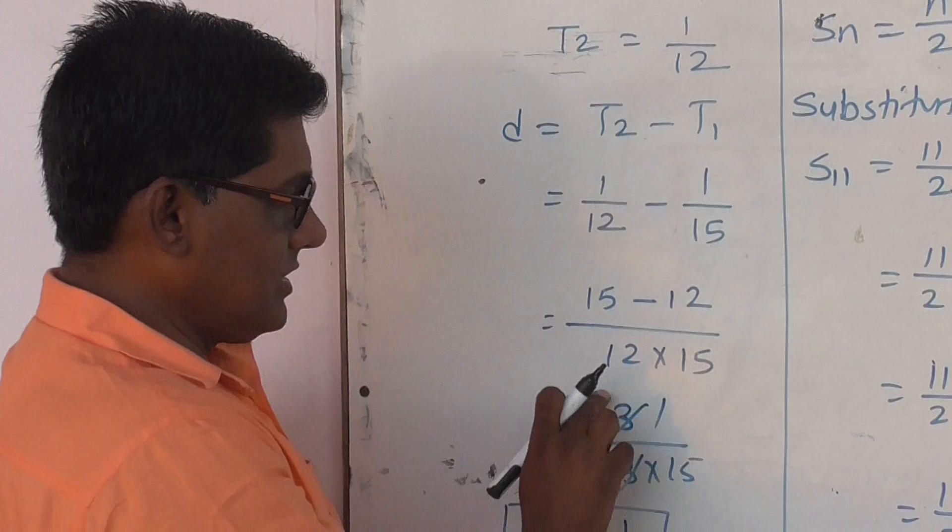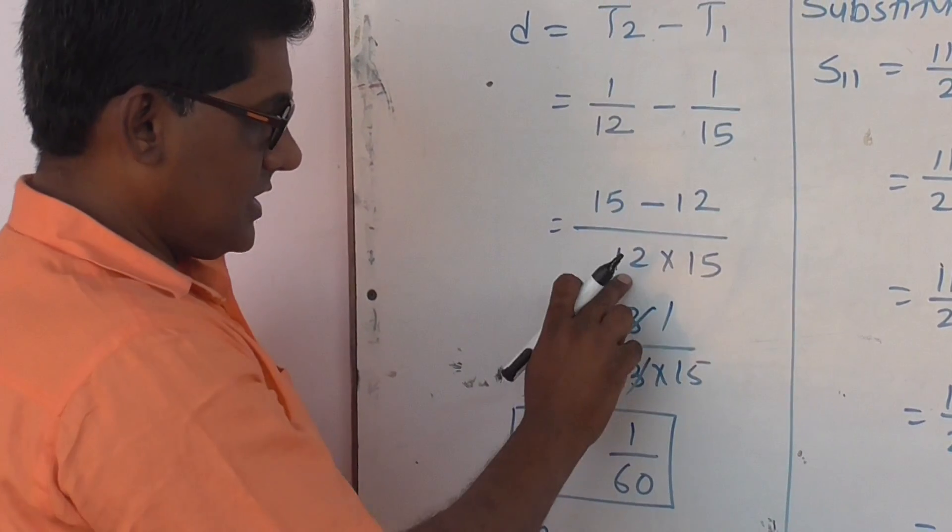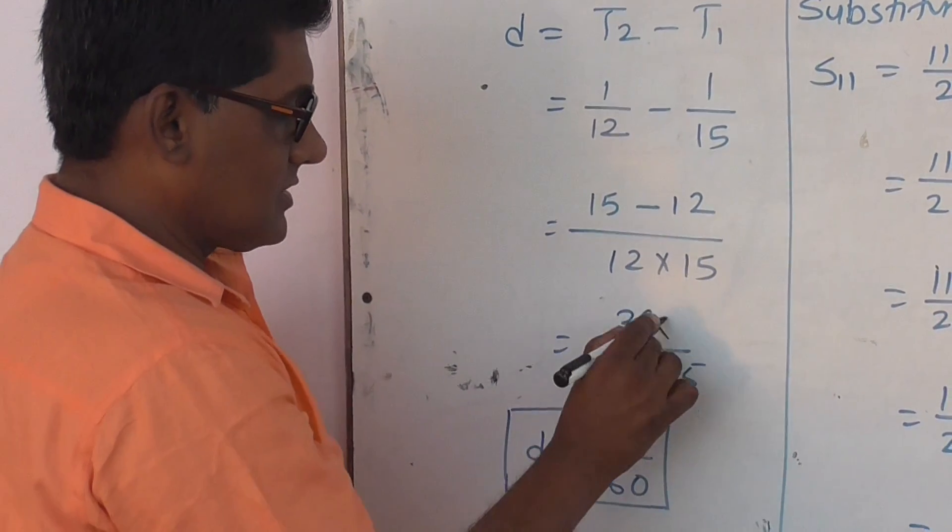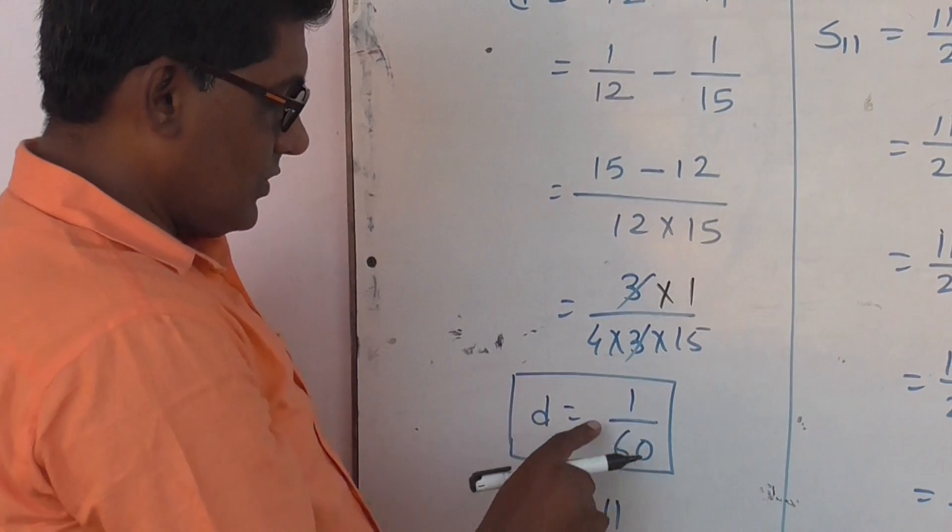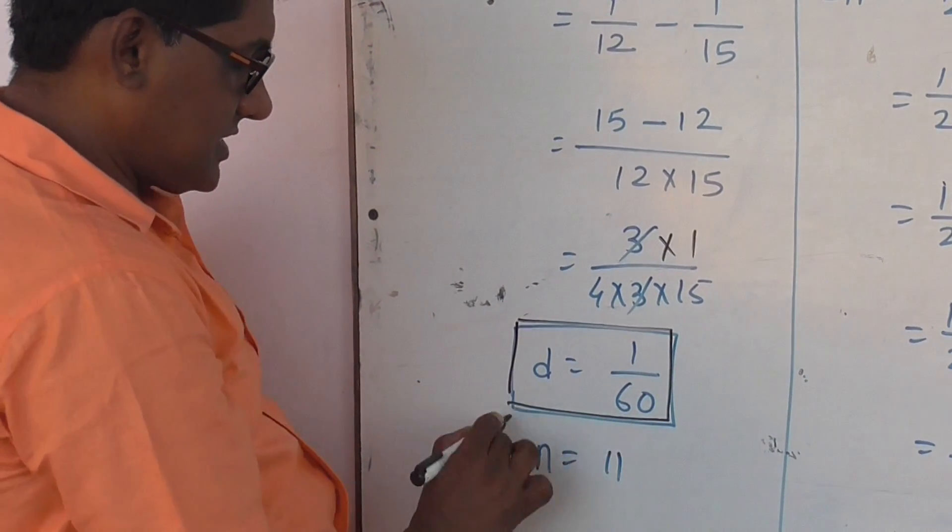Common difference is T2 minus T1. 1 by 12 minus 1 by 15 equals 15 minus 12 over 12 times 15, which gives us 3 over 180. Simplifying, we get d equals 1 by 60.